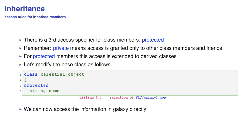There's a third access specifier for class members, which is protected. Remember, private means access is granted only to other class members and friends. Protected members, this access is extended to derived classes. So, if in the celestial object we've declared everything to be protected, then it would have been perfectly fine, and we would have had no problem at all.